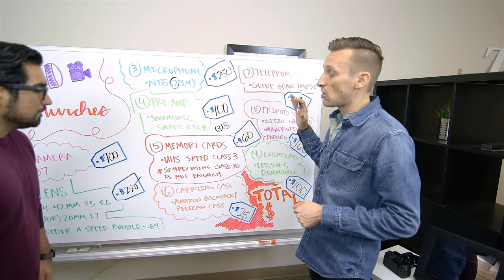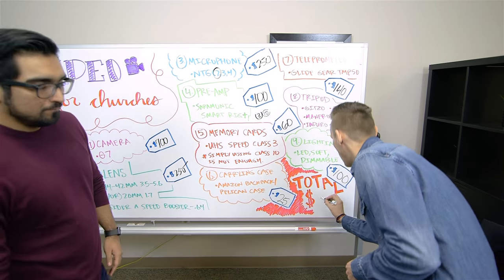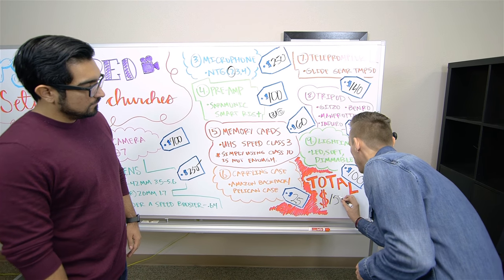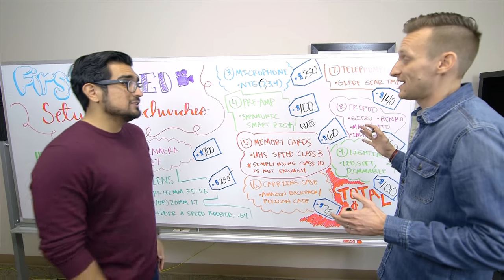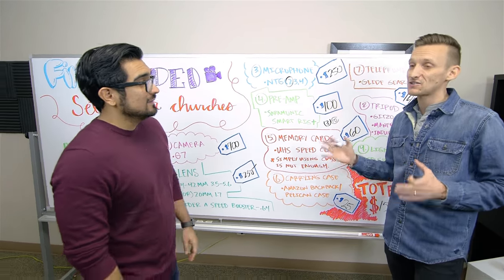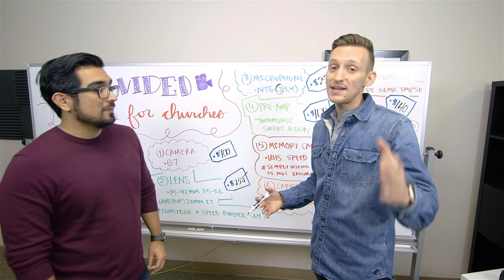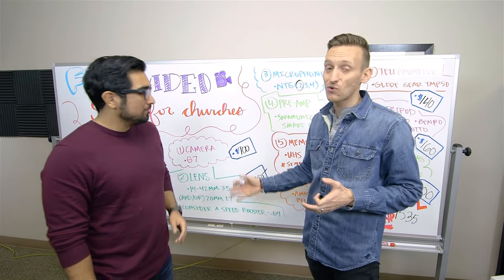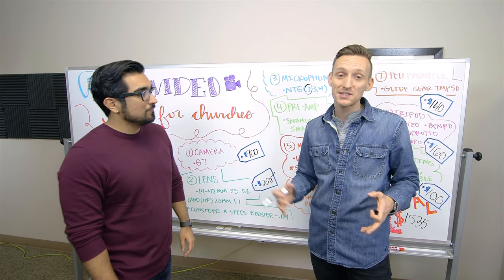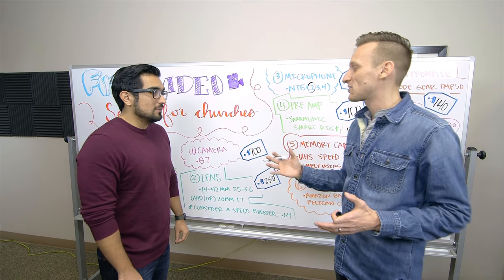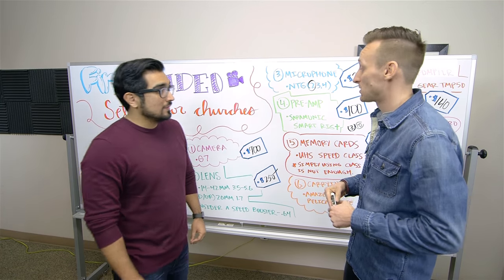So that is our entire budget. This is everything and that brings us to a grand total of $1,535 which is great for the entire setup. There's cameras that are more than that. The camera that we're shooting on right now which only is 1080, it's not even 4K, this is about a $6,000 camera brand new with no lenses, no microphone, nothing like that. So this is just a great place to get started. I don't think anybody's gonna be disappointed with this.